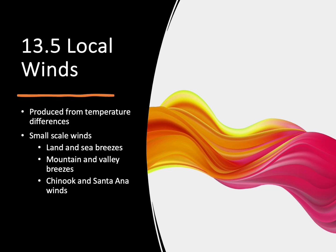In addition to the global wind patterns we discussed in our last video, we also have local wind patterns. Most of the differences are caused by temperature differences — things getting hotter during the day when receiving sunlight and getting colder at night once the land starts releasing the heat. We're going to discuss three types of these local or small-scale winds: land and sea breezes, mountain and valley breezes, and the Chinook and Santa Ana winds.